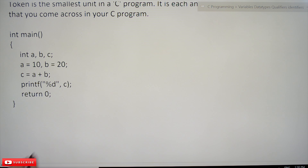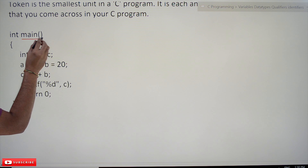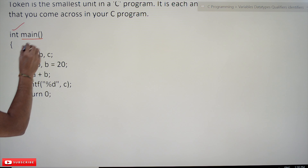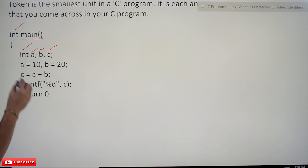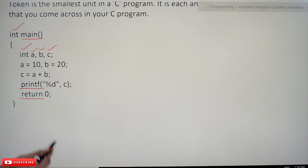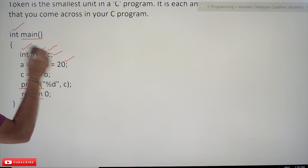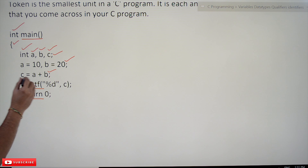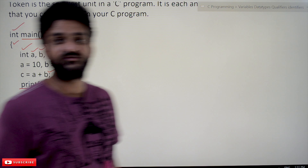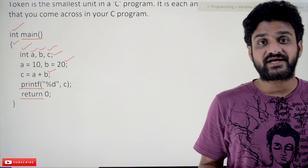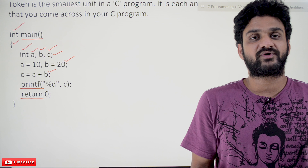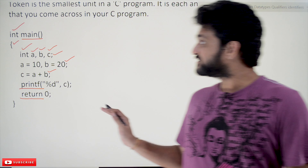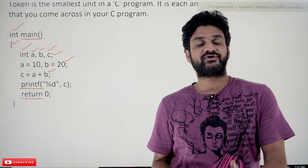In the program: 'main' is an identifier, 'int' is a keyword, the variables a, b, c are identifiers, 'printf' is an identifier, 'return' is a keyword, and semicolons are tokens. Everything in the program is a token — it may be an identifier, a keyword, a string, or a constant. Whatever we come across in our program is what we call a token.